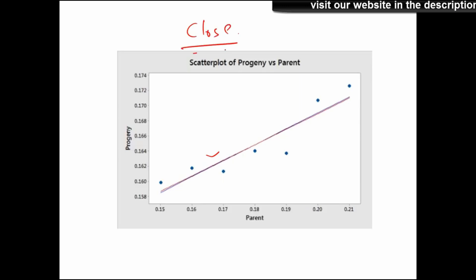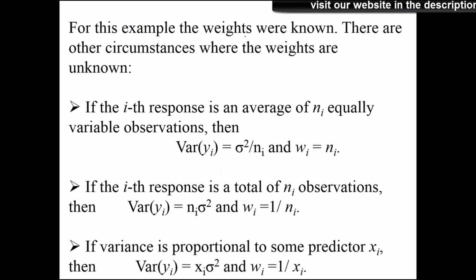There won't be much difference for forecasting purposes, but it does make a significant difference when explaining the marginal effect. In this example the weights are known, but that won't always be the case. So how do you find weights when they're not explicitly given? When the ith response is an average of n_i observations, the variance is simply the population variance divided by n_i.